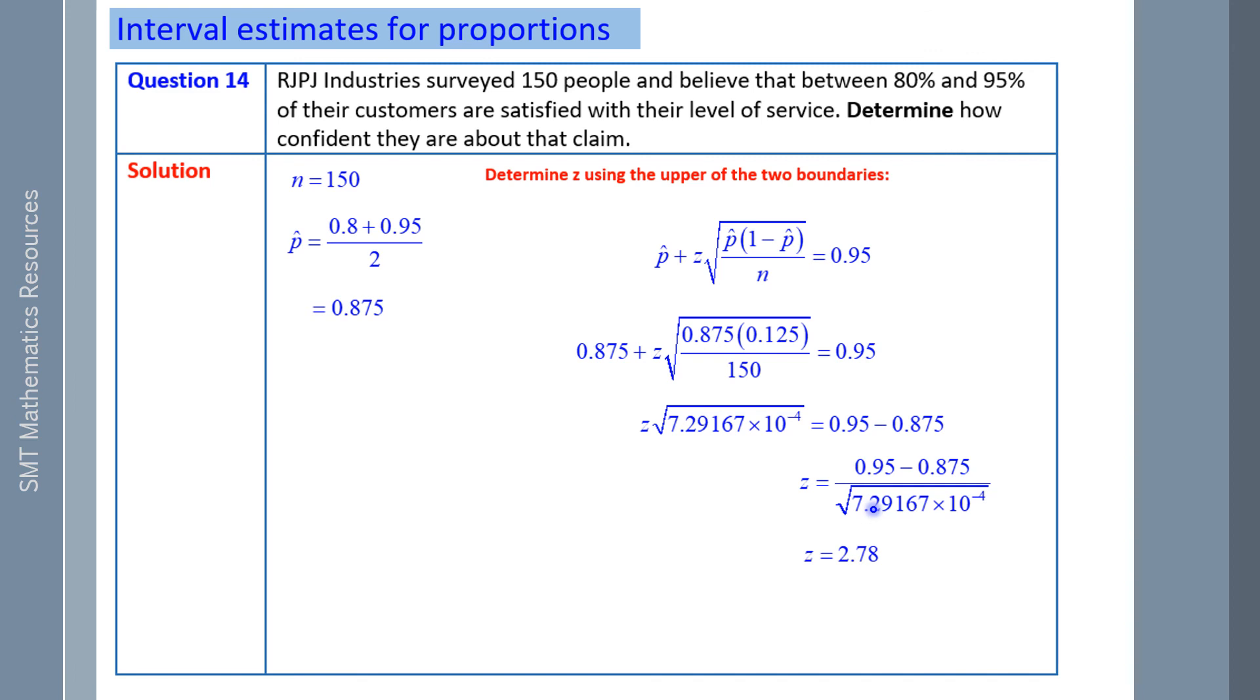Now, if your z score is 2.78, that's the number that you use if you're 99% confident. So there's a 99% likelihood that the proportion will lie in this interval.